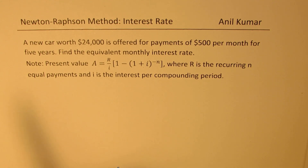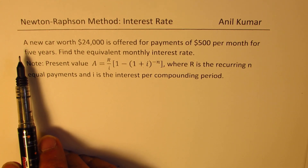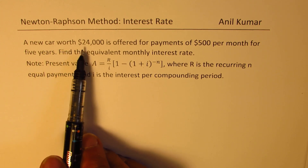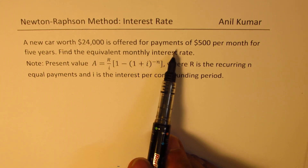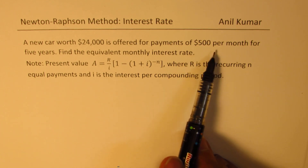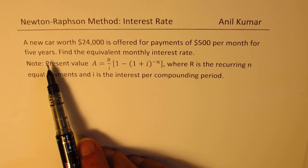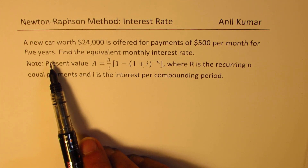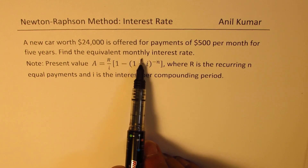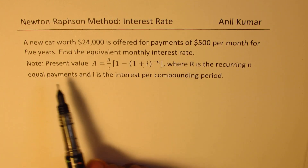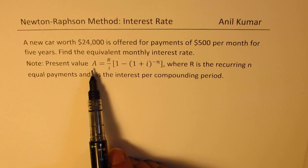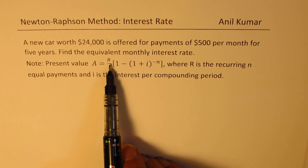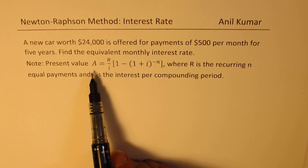There is a situation: a new car worth $24,000 is offered for payments of $500 per month for five years. Find the equivalent monthly interest rate. To solve this, you need to apply the annuity formula, which applies wherever we have recurring payments.